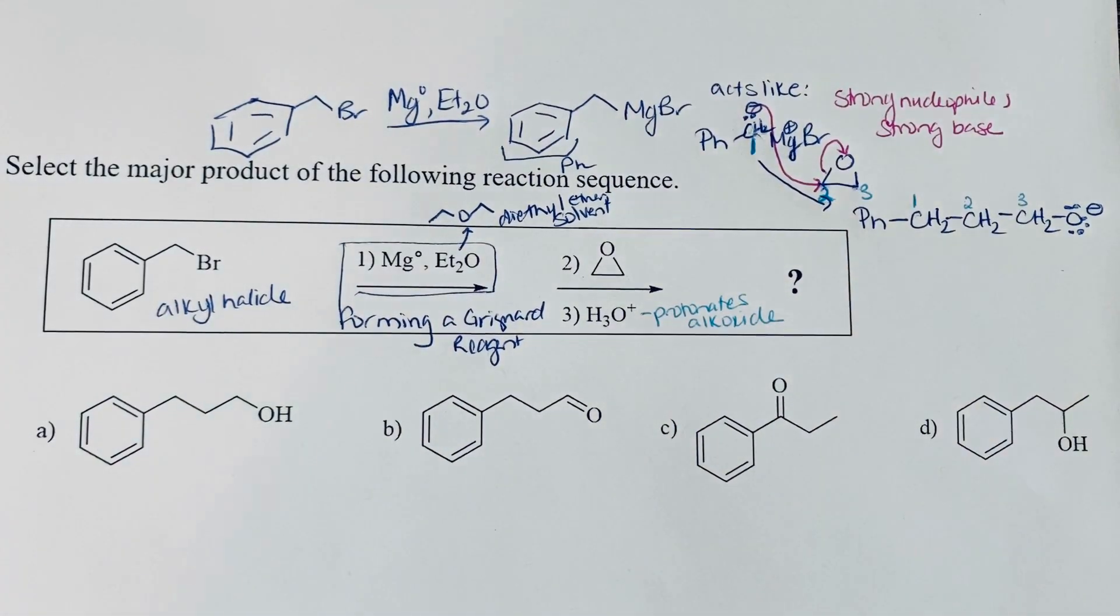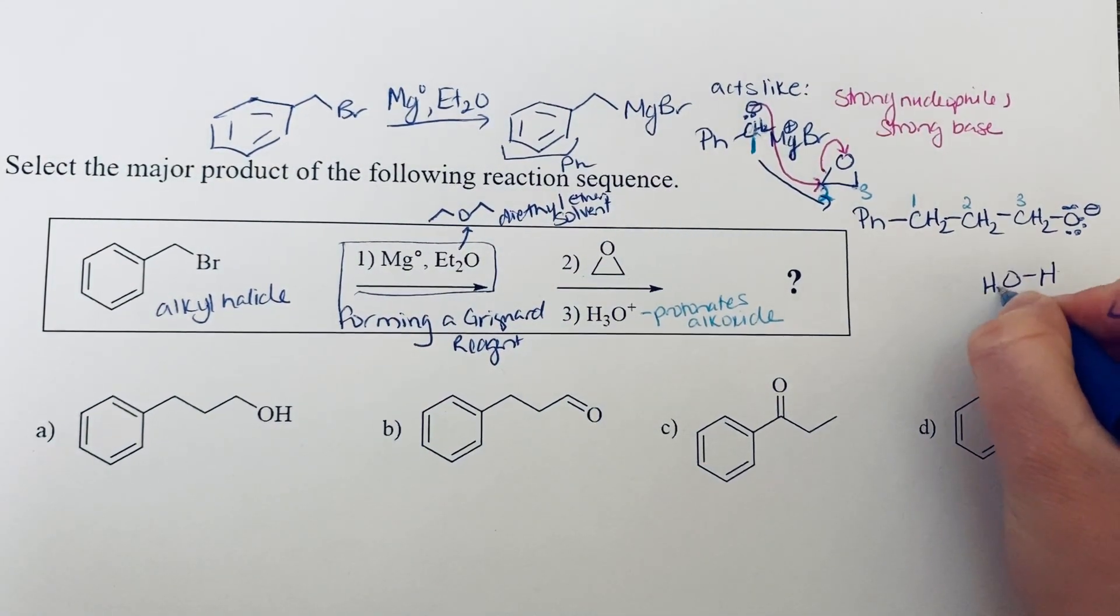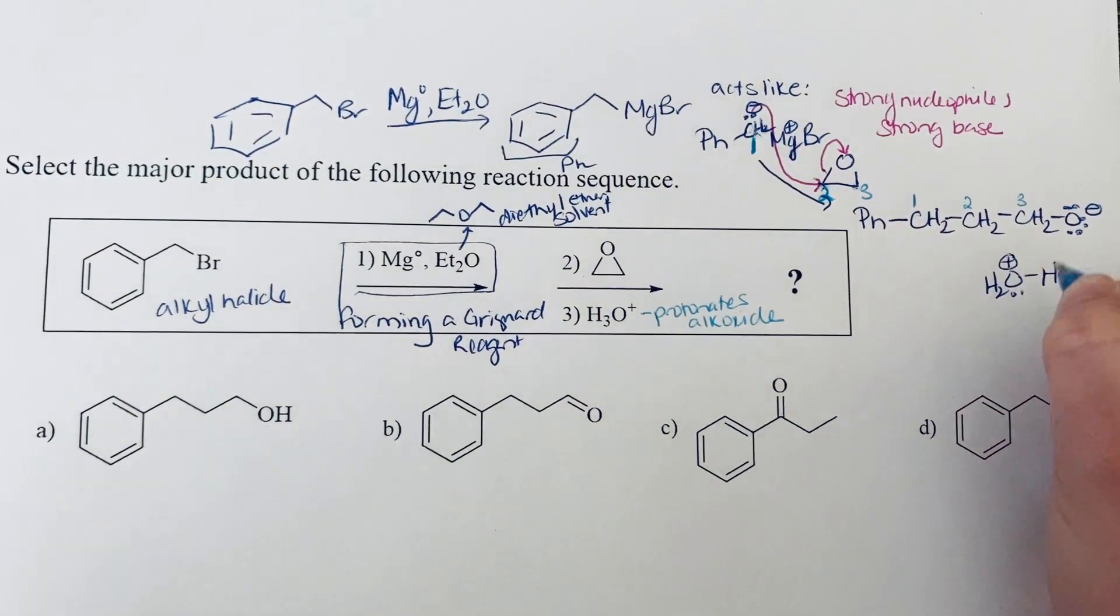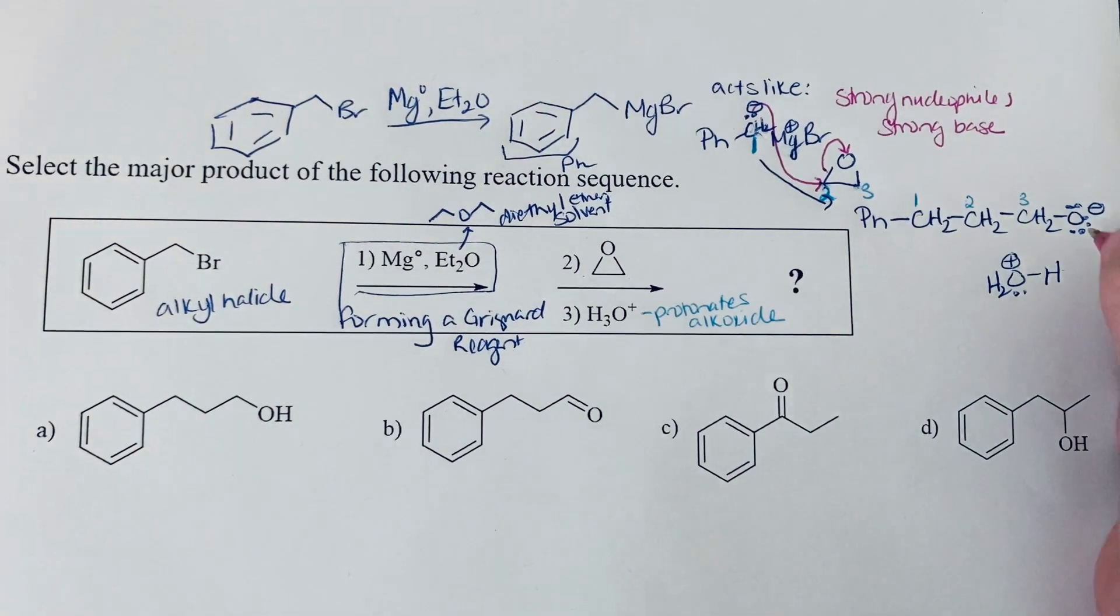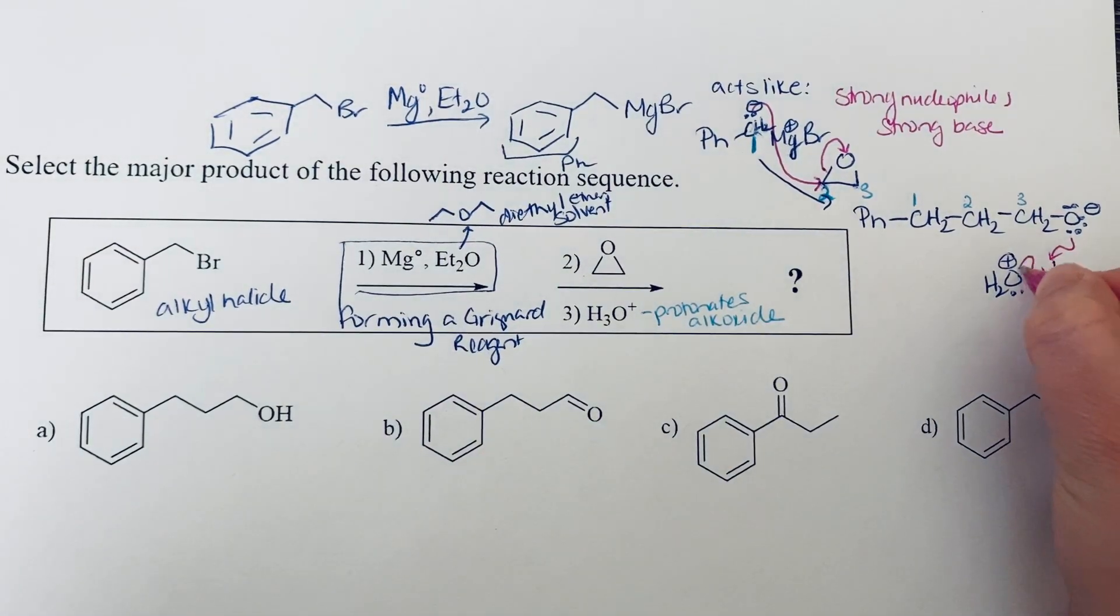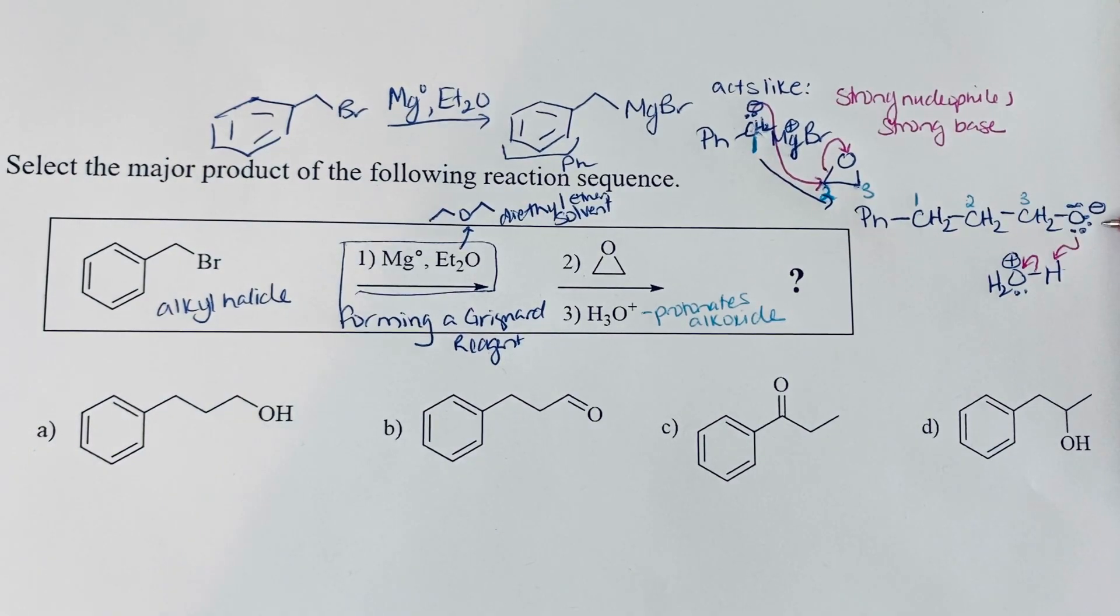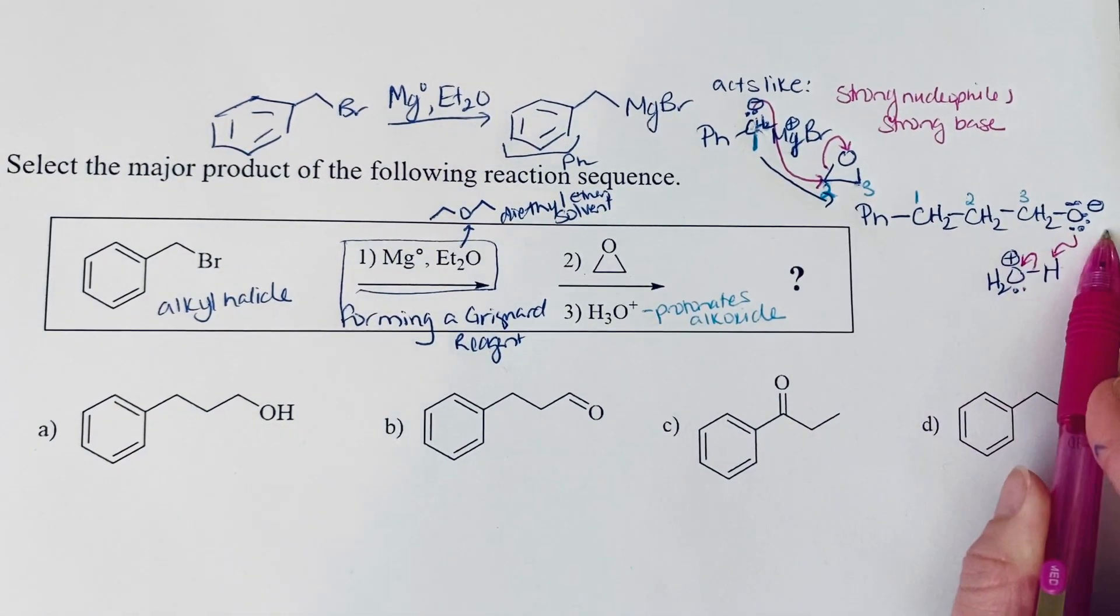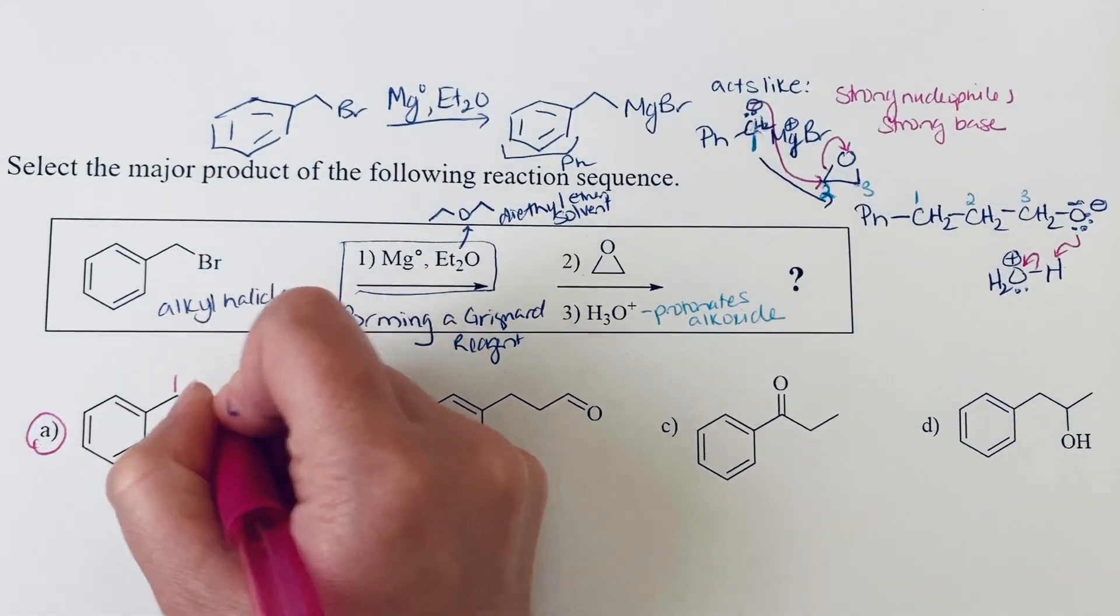So if we add in H3O+, this alkoxide is going to take one of the acidic protons bonds, and we'll break the hydrogen oxygen bond. This is going to make the alcohol. So we'll have the benzene ring, three carbon atoms, and the alcohol, as we see here in A.